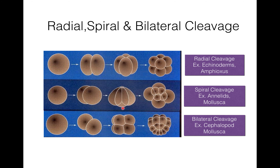In radial cleavage, the cleavage furrows are straight and form right angles with each other. The first and second cleavages are meridional and at right angles to each other; the third cleavage is equatorial, forming an 8-cell octet. The four blastomeres of the upper tier and four of the lower tier are on the same plane, arranged in radial symmetry. This type of cleavage is present in deuterostomes like echinoderms and amphioxus.